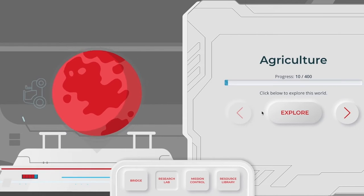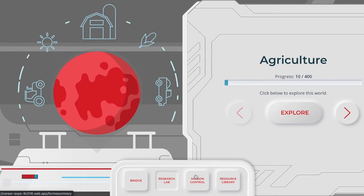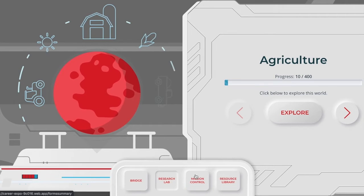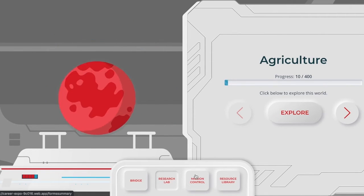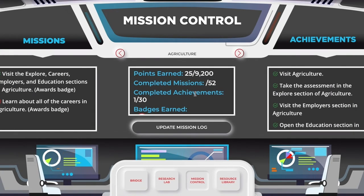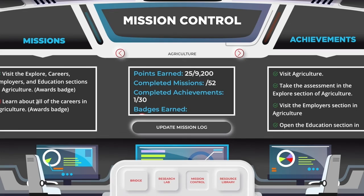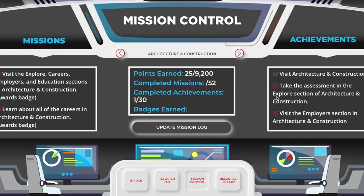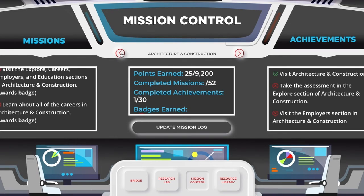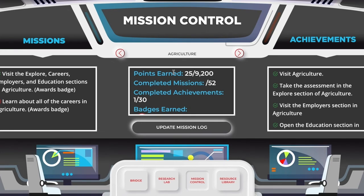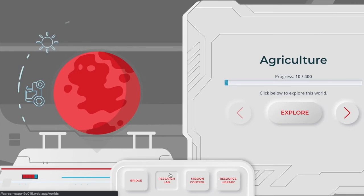Once they're done and you want them to submit a readout, if they go to Mission Control, this screen basically tracks gamification throughout the entire platform. At any point they can see — for example, in agriculture I completed all the achievements and most everything within that world. They can look at every world in the platform and see what they have and haven't done. More importantly, it shows total points earned, total missions completed, total achievements, and the badges they've earned. That's kind of the platform in a nutshell.